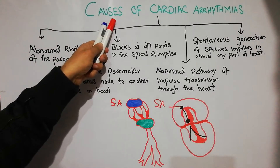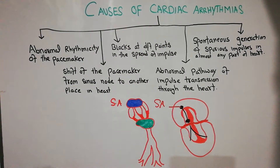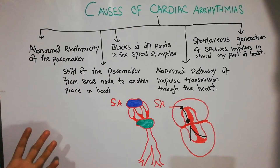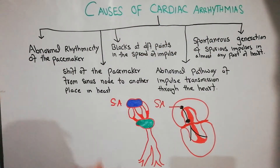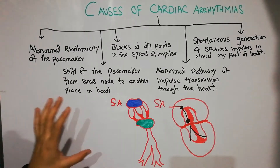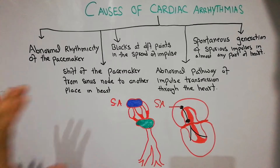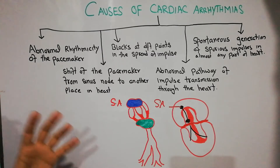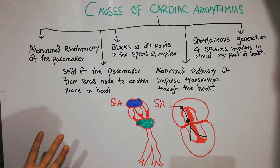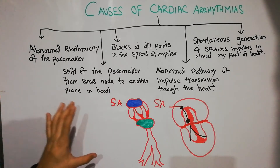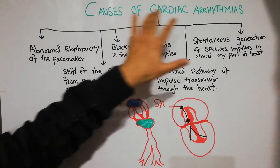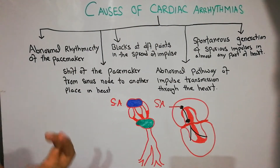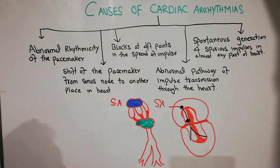Today we are going to discuss the causes of cardiac arrhythmias. We are starting a new series of lectures about arrhythmias. The heart beats in a specific rhythm at a specific rate, and when that rhythm gets disturbed, that is known as arrhythmia. There are different causes for arrhythmias — different ways in which the normal rhythm of the heart can get disturbed.